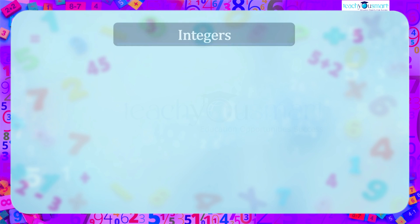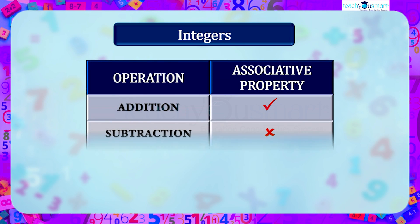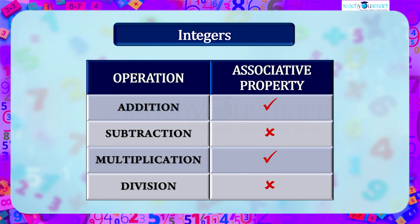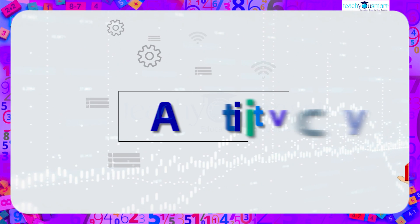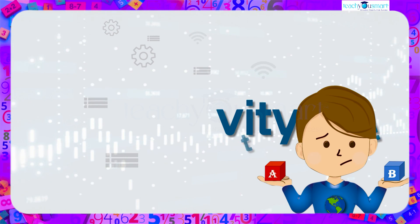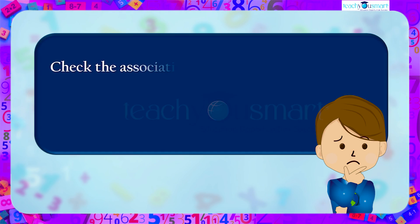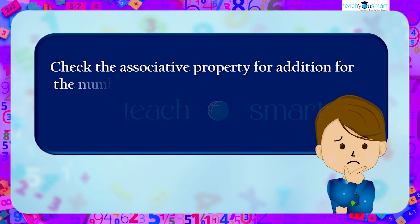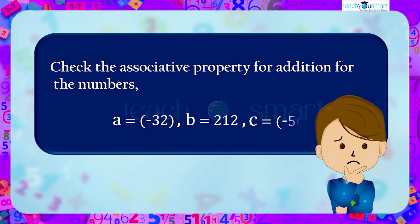Hence, we can say that for integers, addition and multiplication are associative, while subtraction and division are not associative. Before winding up, let's check how much you understood by doing an activity. Check the associative property for addition for the numbers: a equals minus 32, b equals 212, and c equals minus 56.